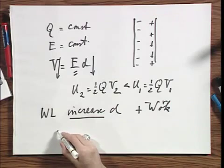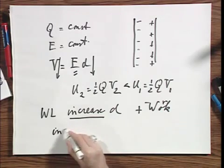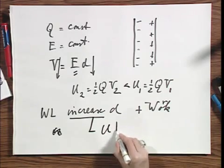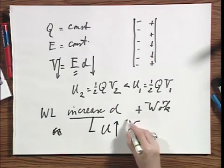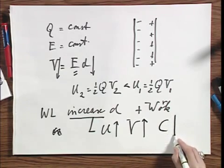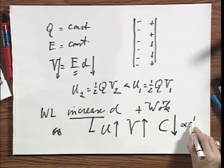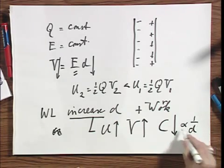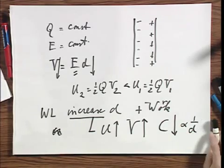So, if I increase D, then U will go up. V will go up, potential difference, and the capacitance will go down. Because remember, the capacitance is inversely proportional to D. So if D goes up, C will go down.